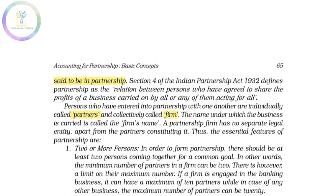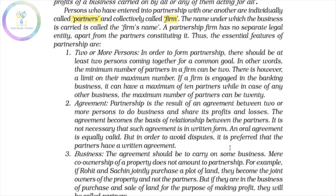The persons who have agreed to do business and share profits with each other — that is the definition of partnership. The individuals in a partnership agreement are called Partners, and the partnership agreement is called a Firm. The first thing to cover is the Essential Features of Partnership, which carry Five Marks or Four Marks.